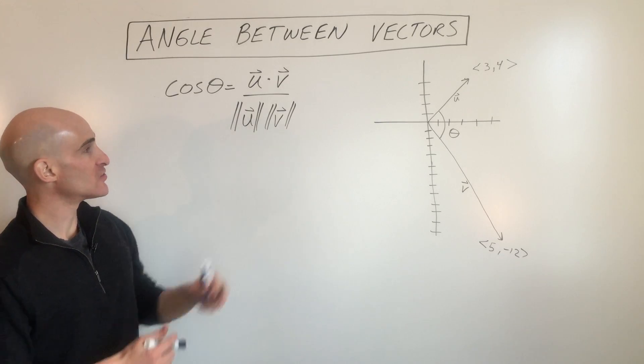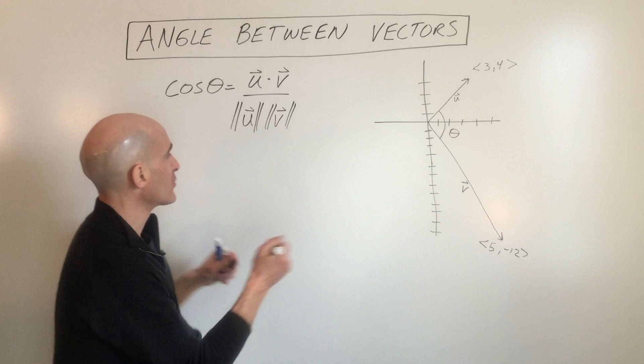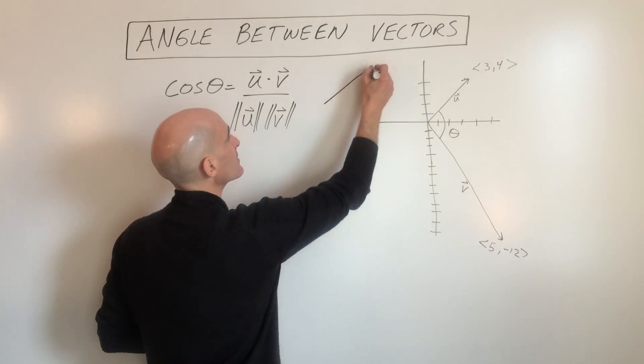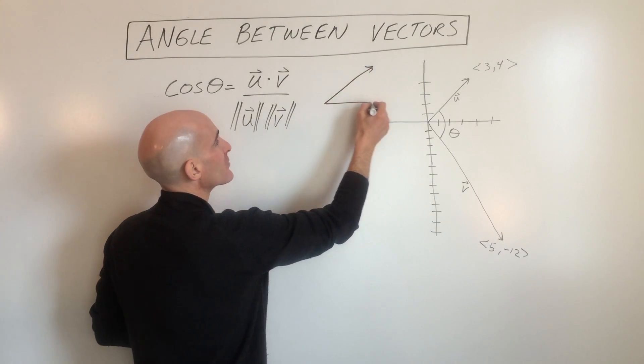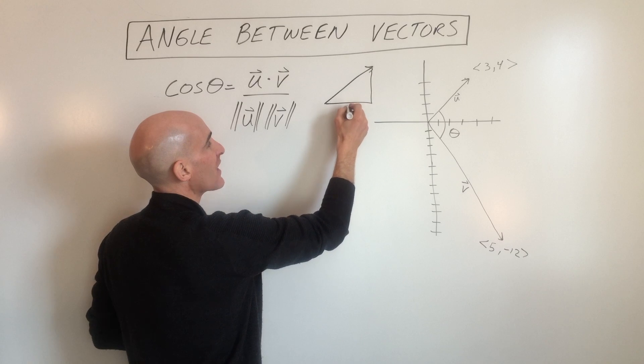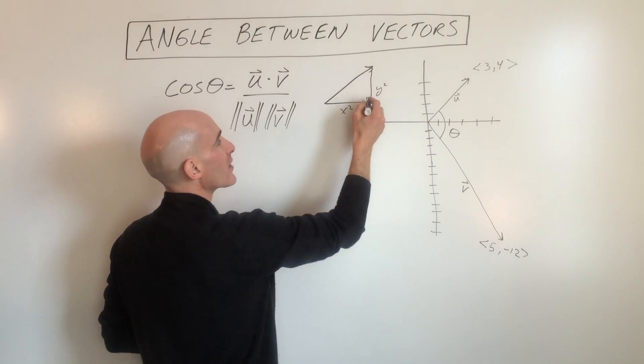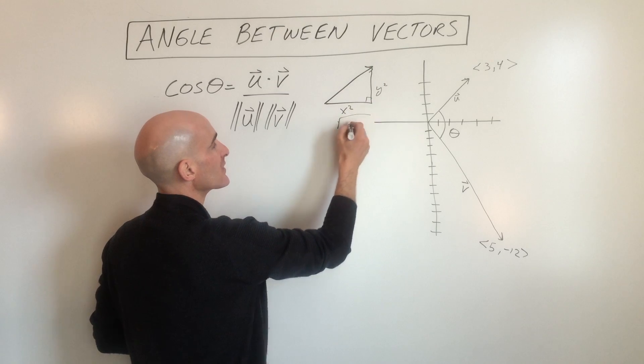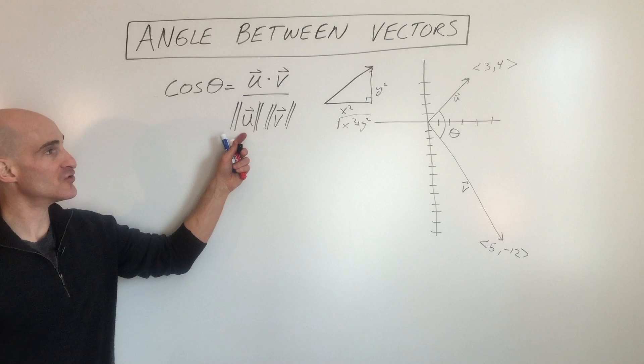The way you find the magnitude is, say your vector is like this, to find that length you're just doing the Pythagorean theorem. So it's the x-coordinate squared plus the y-coordinate squared and you take the square root, like square root of x squared plus y squared. That'll give you the magnitude of the vector.